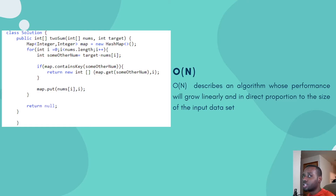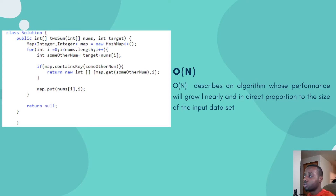Next is O(n) — linear time. This describes that your algorithm's performance will grow linearly, in direct proportion to the size of the input. If you have 10 elements in your array, the number of operations is 10. If your input becomes 1,000 elements, it'll take 1,000 operations. If it's 10,000 elements, it takes 10,000 operations. It grows linearly — it's a pretty decent algorithm, slower than O(log n) but still pretty good.